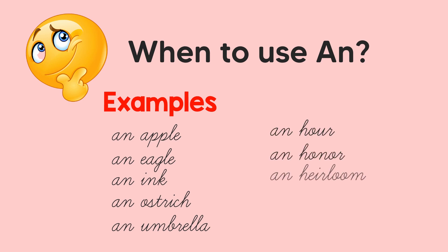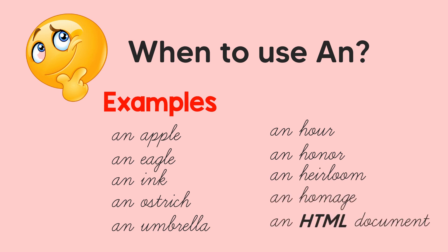More examples using AN: an hour, an honor, an heirloom, an homage, an HTML document. In these examples, the words begin with a consonant letter. But take note — we use AN when the word begins with a vowel sound, regardless of its spelling. In 'an hour,' the first sound we hear is a vowel sound. The same goes with honor, heirloom, and homage — the H is silent, so we hear a vowel sound. In 'an HTML document,' the first letter is the consonant H, but when we say HTML, we hear the vowel sound 'aitch.' Since A is a vowel sound, we use the article AN.